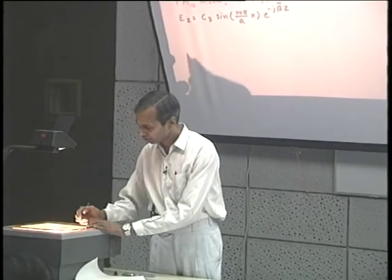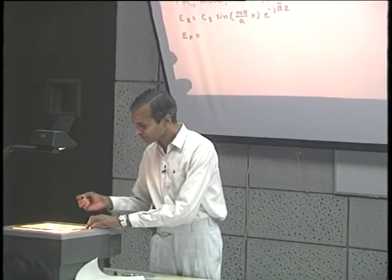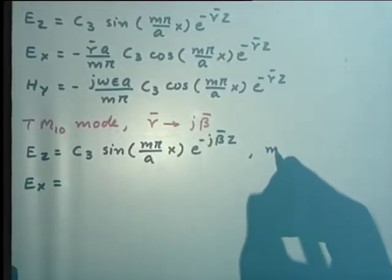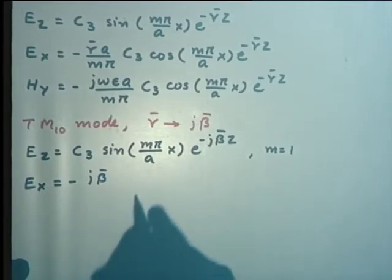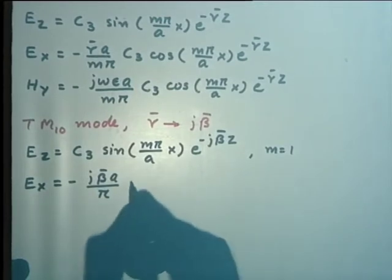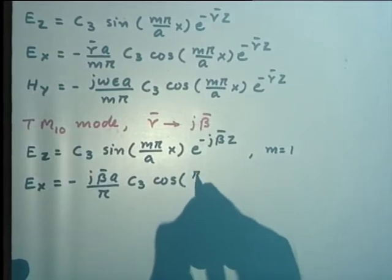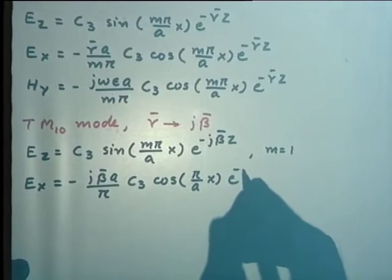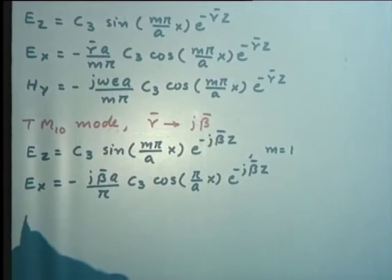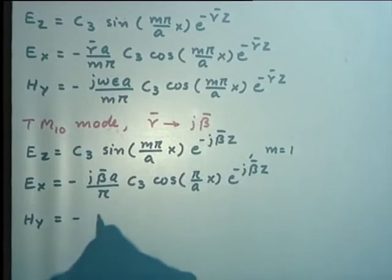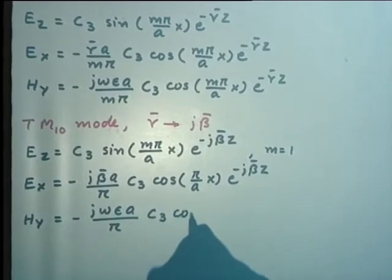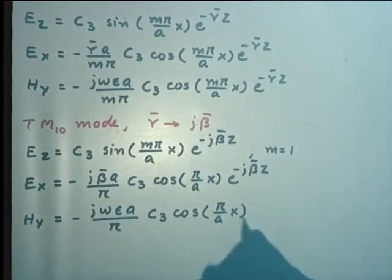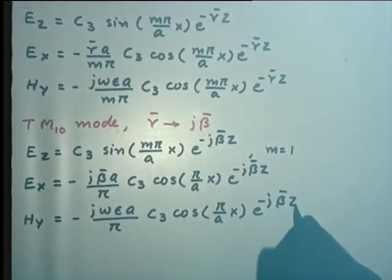The other field components for the TM10 mode become: Ex = −(jβ̄A/π)·C3·cos(π/A · x)·e^(−jβ̄z), and Hy = −(jωεA/π)·C3·cos(π/A · x)·e^(−jβ̄z). These are the exact phasor expressions for the TM10 mode in the frequency range when γ̄ is completely imaginary and its magnitude equals the phase shift constant.